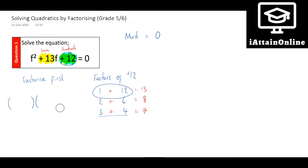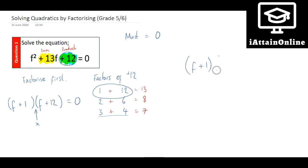So I'm just going to write out my brackets with that equal to zero on the end, and my two brackets become (f + 1)(f + 12). It doesn't matter if you wrote them the other way round, because there is an invisible times sign between the two brackets, and when we multiply numbers it doesn't matter which way round we multiply them.